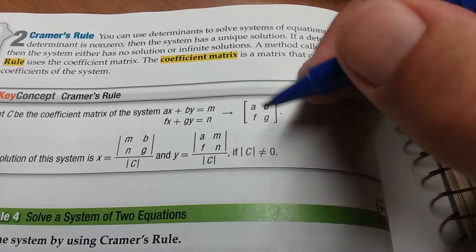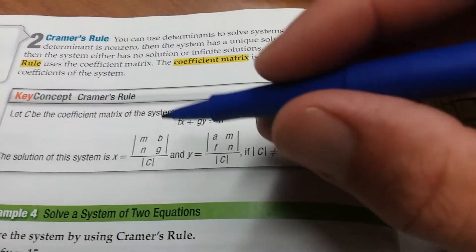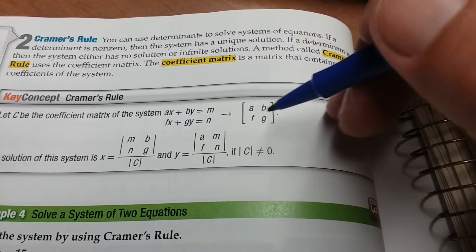So A, B, and F, G are the coefficients. And the coefficient matrix is going to be A, B, F, G.